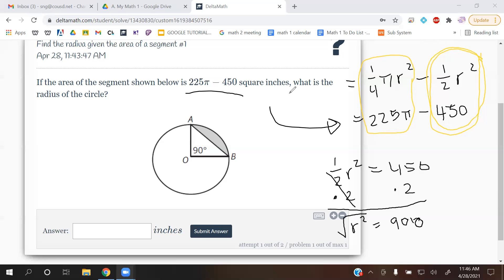And then we have r² is equal to 900. So how do you get rid of squared? You take the square root of both sides. The square roots and the square will cancel with each other out. You will get r is equal to 30. So the radius is 30.